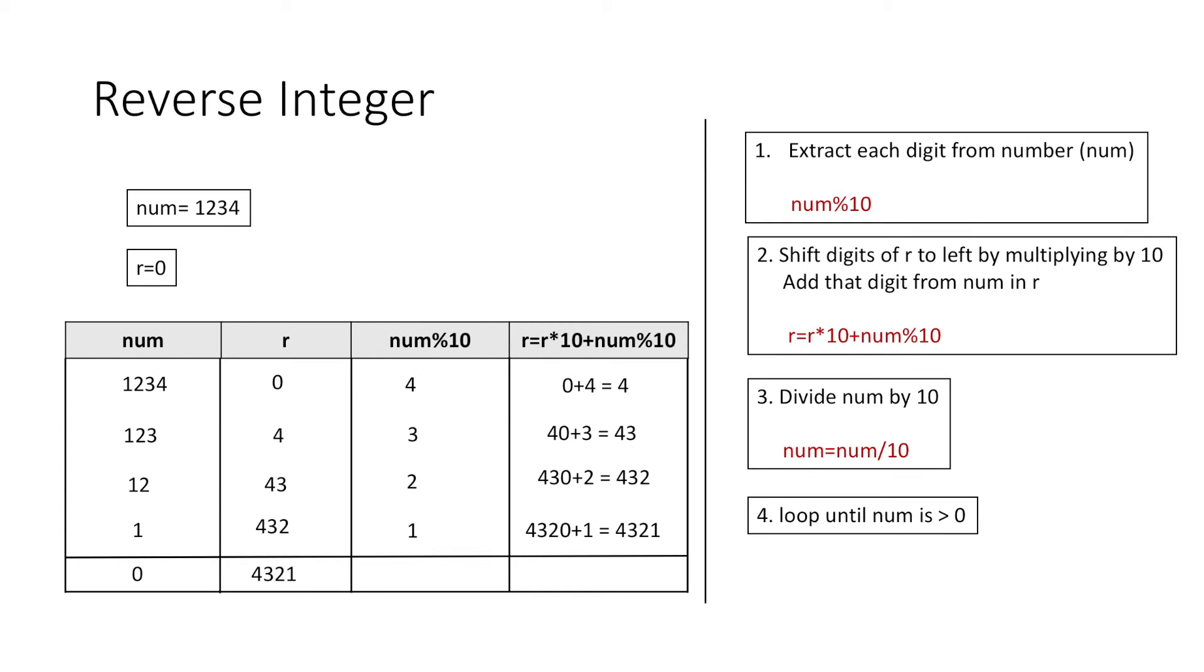Now one thing we have to take care is that for negative numbers our method won't work, because our loop is running until num is greater than 0, and for negative numbers the condition would always be false. Therefore we have to take care of negative numbers which we will do in the implementation part.